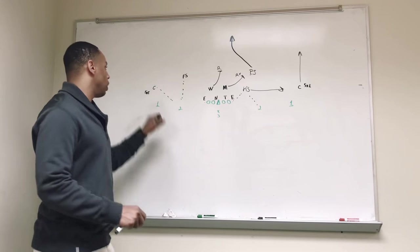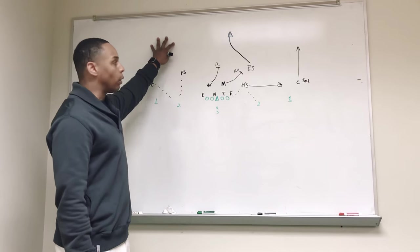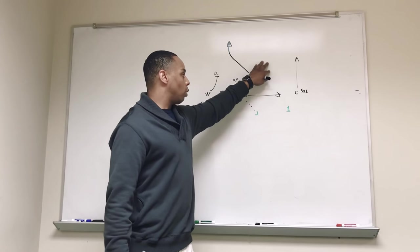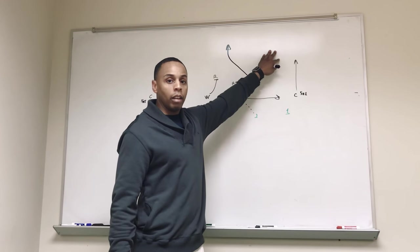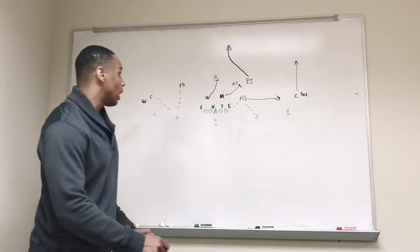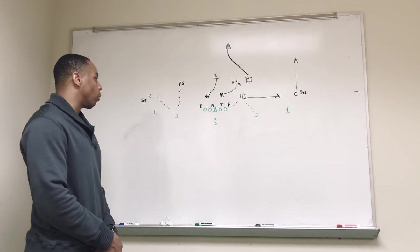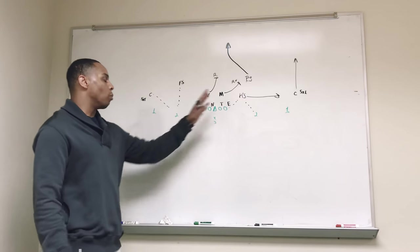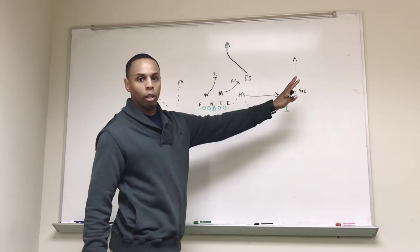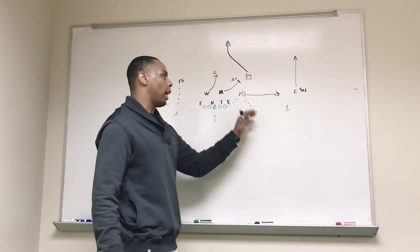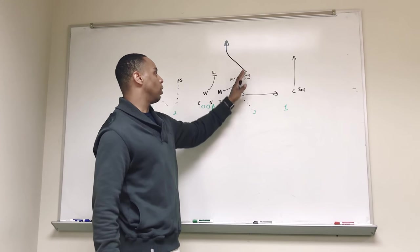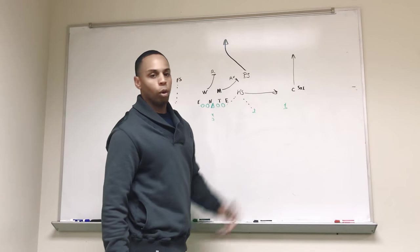So what that allows us to do is with these two guys covering and able to cover anything vertical, and we have our rover safety and our corner playing any vertical threats, that allows us to have four people possibly playing vertical routes, which takes care of all-go special or four verts, and allows us to still outnumber people to the wide side of the field. We know in high school football they like to swing backs and throw bubbles and things like that. It still gives us three versus two over here.